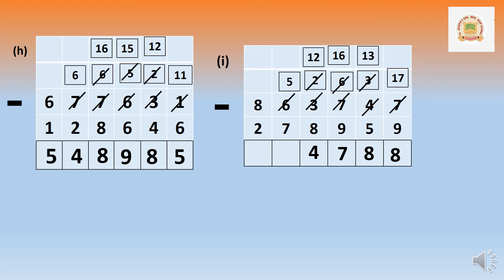Five cannot minus 7 in the ten-thousands place. Borrow from 8 lakh — it gives 1 lakh, making it 1 lakh 50,000, and 8 lakh becomes 7 lakh. 150,000 minus 70,000 equals 80,000, that is 15 minus 7 equals 8. In the lakhs place: 7 minus 2 equals 5. Answer is 5,84,788. This is the method to do subtraction with regrouping or with borrowing.